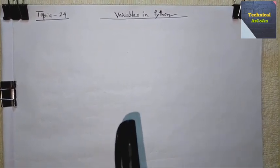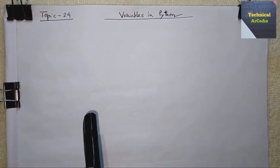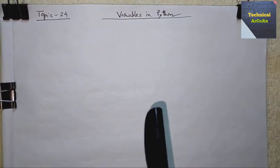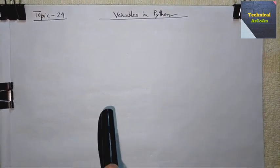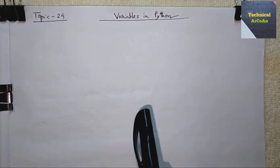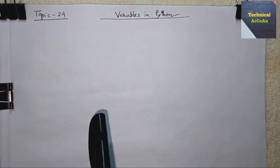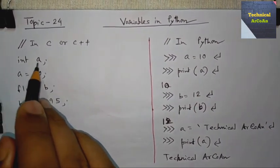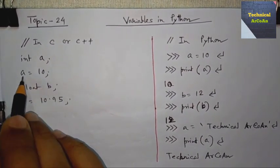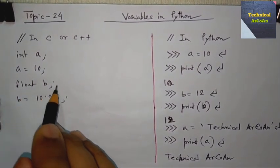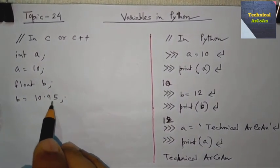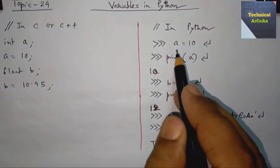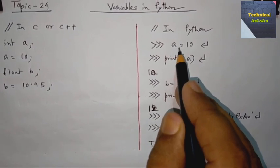But variables in Python are not subject to these restrictions. In Python, a variable may be assigned a value of one type and then later reassigned a value of a different type. For example, in C or C++, we first declare the variable like: int a; then a = 10; similarly, float b; and b = 10.95.